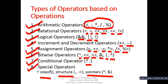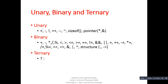Now, the previous types can be categorized into unary, binary, and ternary categories. So you can see: plus, minus, NOT, plus-plus, minus-minus, complement, sizeof, and pointer operators are considered as unary operators.